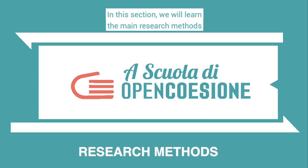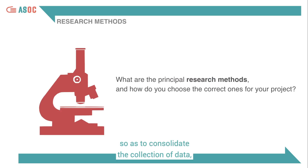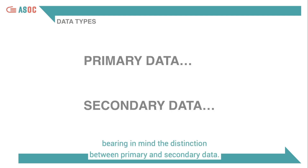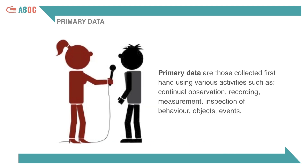In this section we will learn the main research methods so as to consolidate the collection of data, documents and information. It is important to know the types of data useful for our research, bearing in mind the distinction between primary and secondary data.